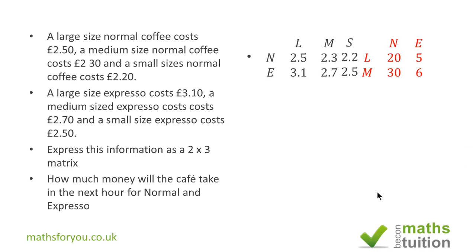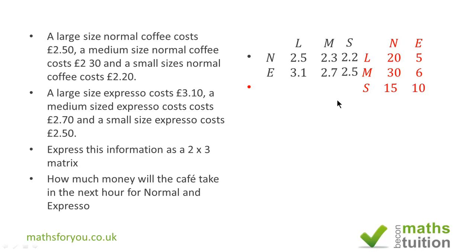Here is the set out. The matrix in black is the cost matrix and the matrix in red is the quantity matrix. Note that the cost matrix is a 2x3 — that's 2 rows and 3 columns. And the quantity matrix as before is a 3x2 matrix.